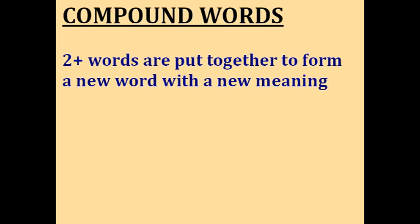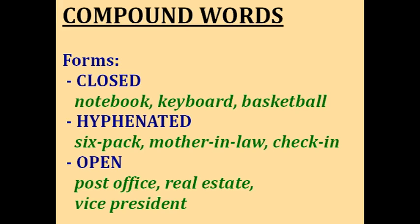Compound words are when two or more words are put together to form a new word with a new meaning. There are three forms of compound words. The closed form, where the words are together, like notebook, keyboard, and basketball. The hyphenated form, where the words are connected by a hyphen, like six-pack, mother-in-law, and check-in. And we have the open form, where the words are separated by a space, like post office, real estate, and vice president.